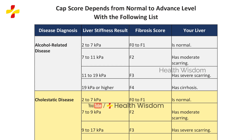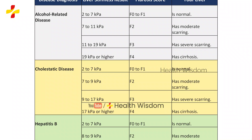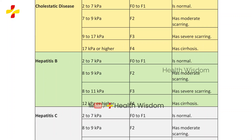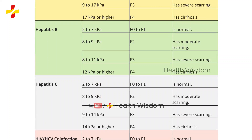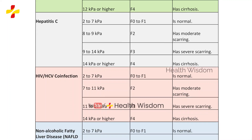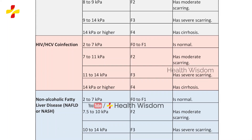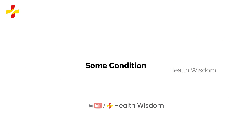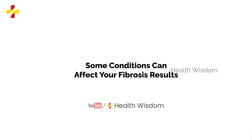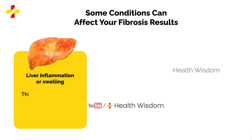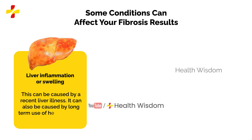CAP score results also depend from normal level to advanced level. Normal results are usually between 2 and 7 kPa, and the CAP score result may be higher than normal if you have hepatitis or liver disease. Here is the entire list shared in the table, disease-wise — please take a look, as it is mandatory for every hepatitis patient to know. Some conditions can affect your fibrosis results, such as liver inflammation or swelling, which can be caused by a recent liver illness.